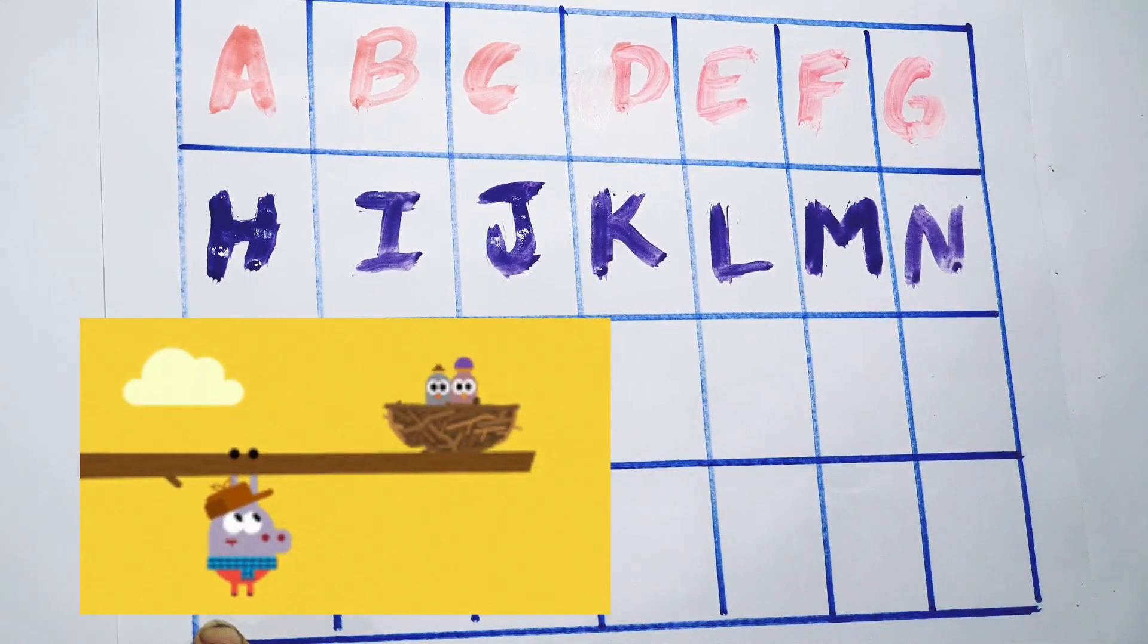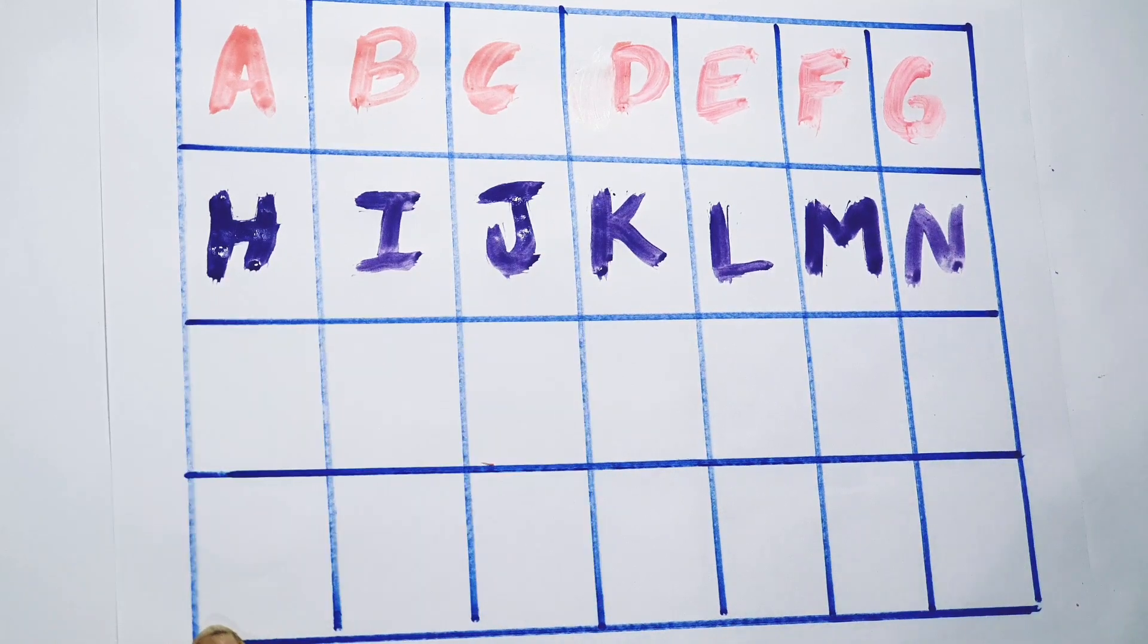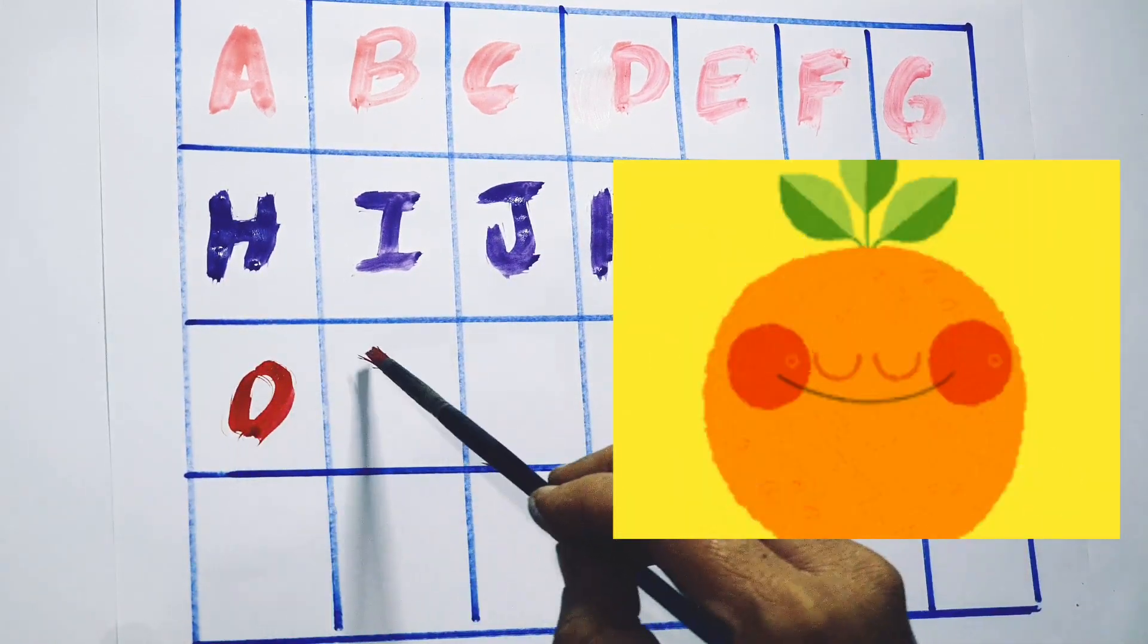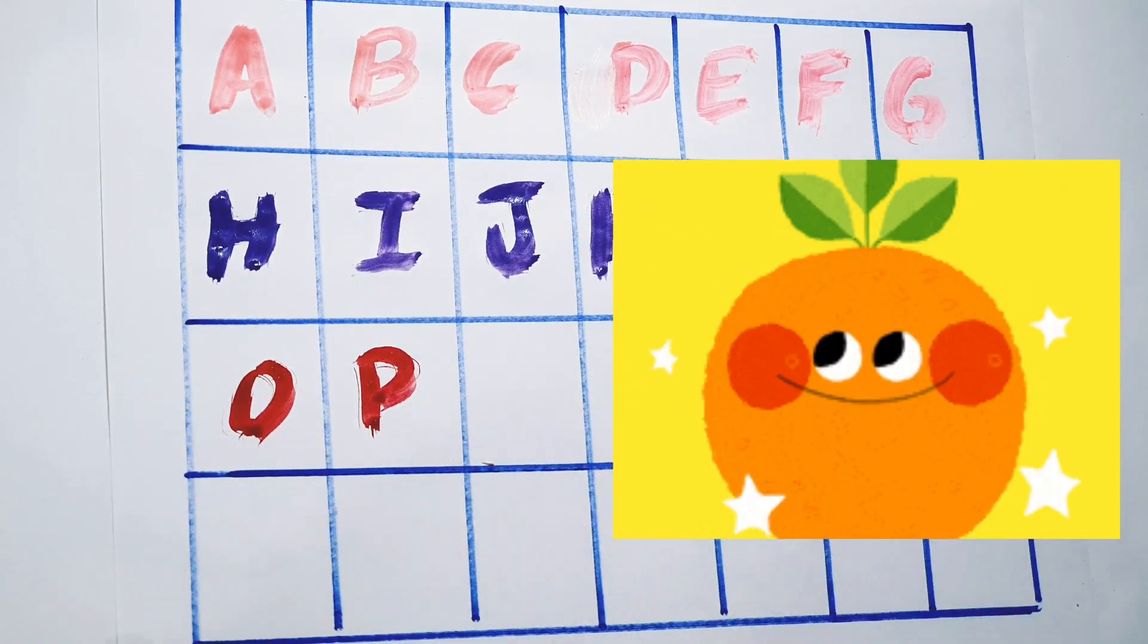N for nest. Red color. O for orange, P for piano.